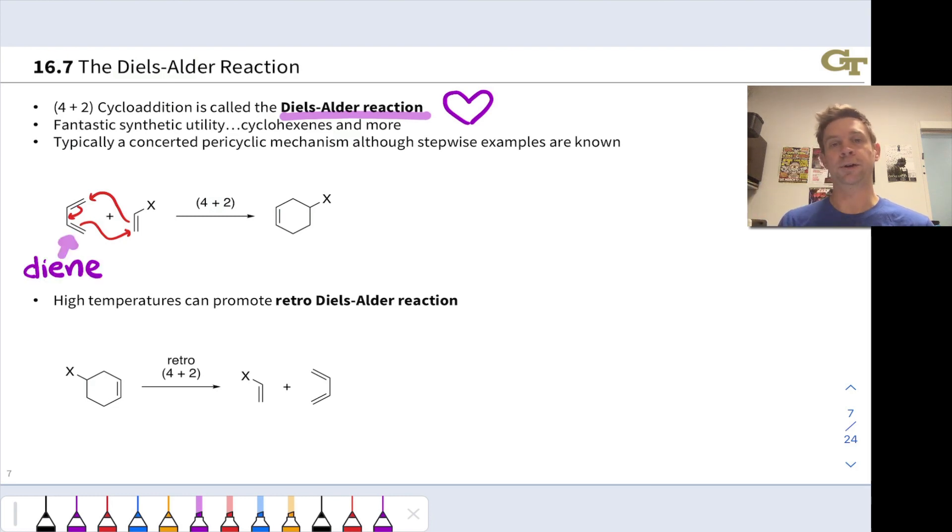The 4-pi component is simply called the diene, and we've used this term before to describe a conjugated structure with two double bonds separated by a single bond.